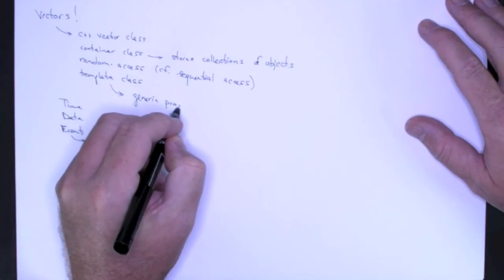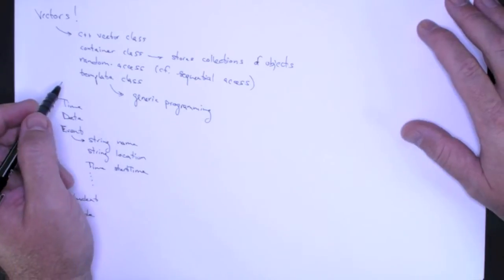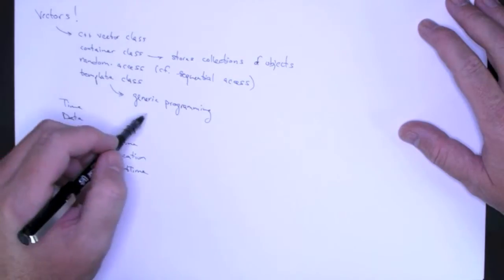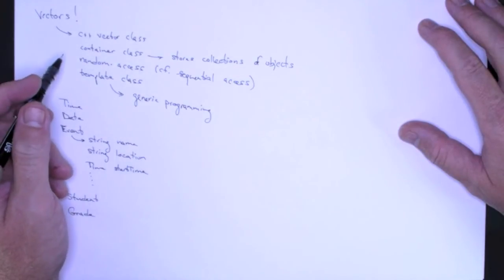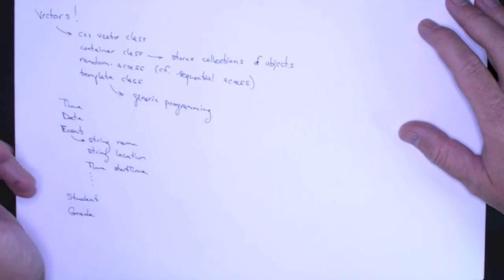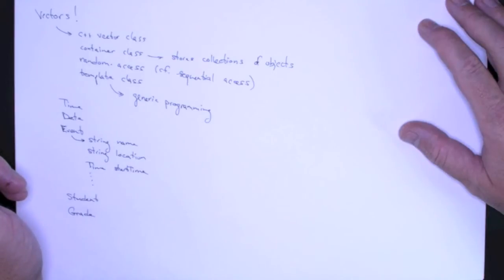And Java also has a mechanism for building container classes that can store any object. So this is actually a pretty modern innovation. Now usually we don't cover template classes until the second semester, but you can certainly learn how to use vectors.